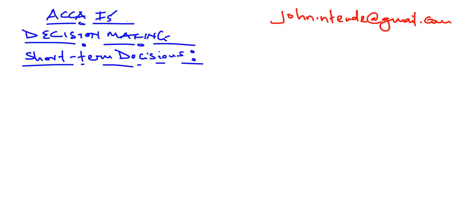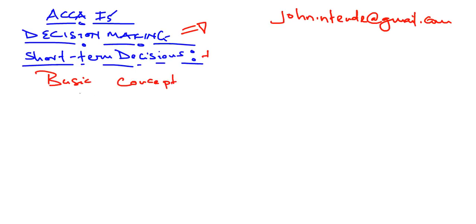Today we're going to look at a syllabus area called decision-making, which is critical for your F5. And specifically, we're going to be looking at short-term decisions. The basic concept is something called relevant costing.